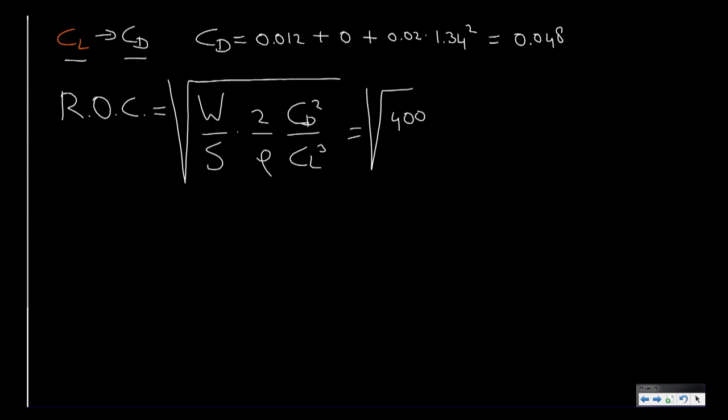So if we insert all numbers, then we get 4000 for the weight, 10 for the wing surface area, 2 over the air density, we get CD squared, and CL to the power 3. And if we work it out, we'll find that the optimum rate of climb is in fact equal to minus 0.83 meters per second.